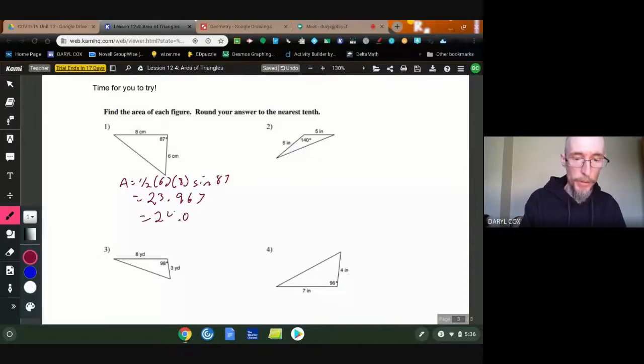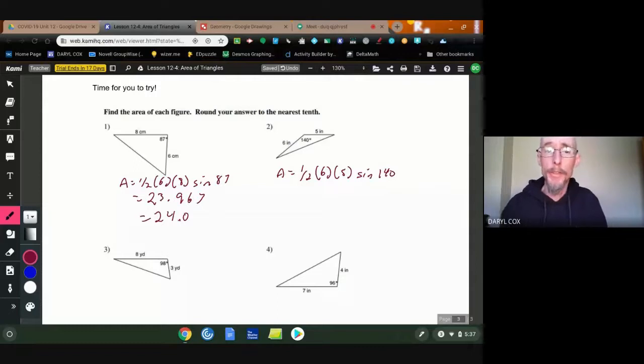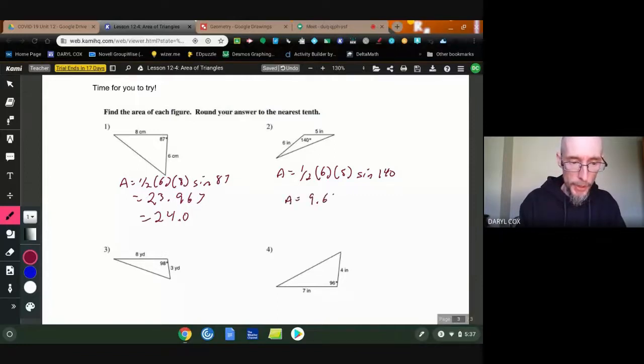Looking at the next problem. So again, one half, six times five, sine of 140. Notice we're using different triangles this time. We're not just doing our sine and cosine of acute angles. So that's going to be that times the sine of 140. And I get that area to be 9.6418. Rounded to the nearest tenth is 9.6.